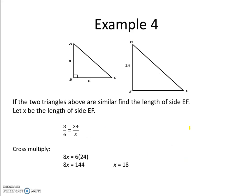If the 2 triangles in example 4 are similar, find the length of side EF. We are given the two sides in triangle ABC. We have 8 is to 6, and we're going to let x be the length of side EF.